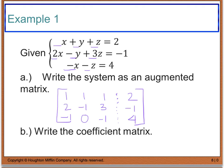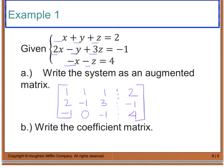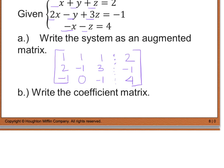This is what an augmented matrix looks like — all coefficients on one side and all constants on the other. For the coefficient matrix, I just deal with strictly the coefficients: 1, 1, 1 for the first row; 2, negative 1, 3 for the second row; and negative 1, 0, negative 1 for the third row. That's all that needs to be listed.